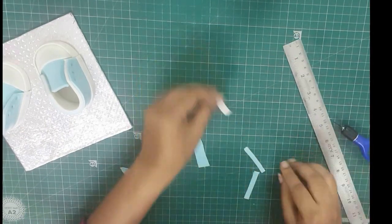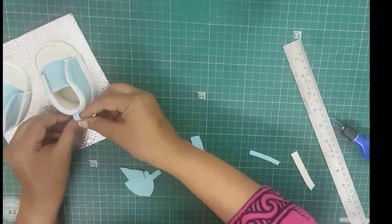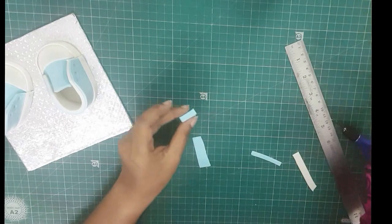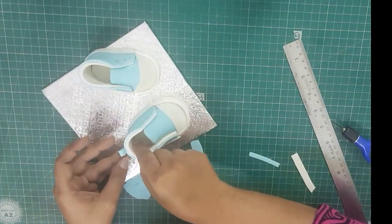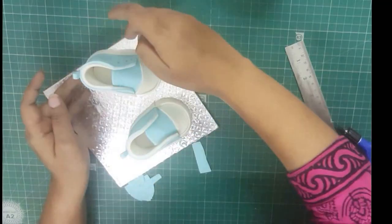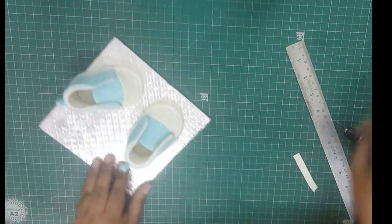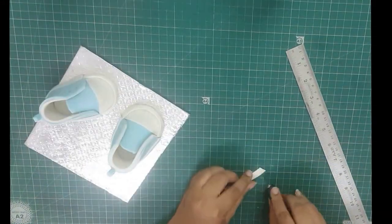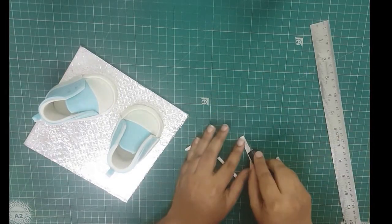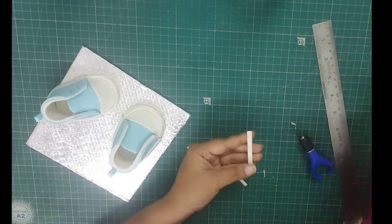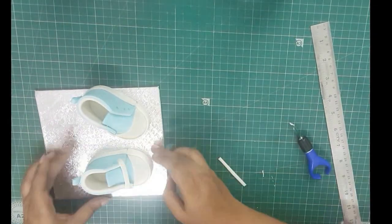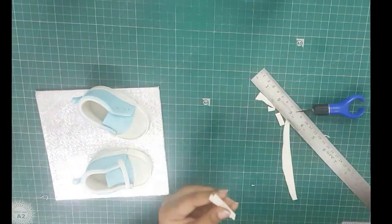Cut out two small strips of blue for the back loop and stick as shown. Next, cut out six thin strips in white. Make sure they are equal in size. This is for the lace. Glue and stick them in position.